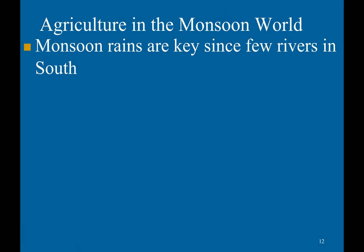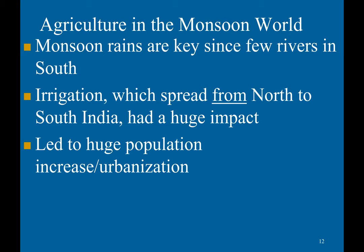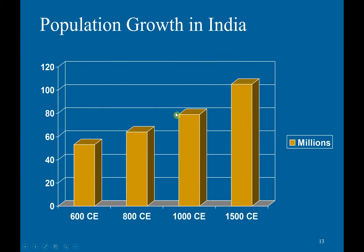The monsoons were very important not just for trade but also for agriculture, providing rainwater — which was especially significant given that there are very few rivers in southern India. Irrigation techniques eventually spread from northern India to the south, leaving a major impact. This all led to a huge population increase and urbanization. India's population grew from 50 million in 600 CE to just over 100 million in 1500 CE.